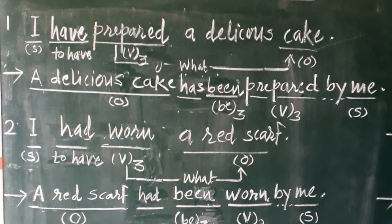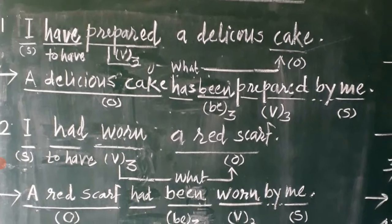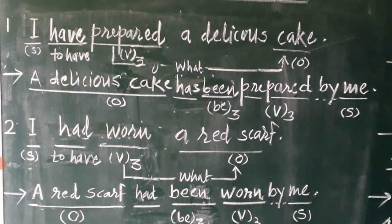While preparing the passive construction of a sentence in perfect tense, we need to put one more past participle. The past participle of 'to be' is 'been,' so that we can differentiate between an active sentence and a passive sentence. 'A delicious cake has been prepared by me' — 'I' is converted into 'me.' This is how a sentence in perfect tense is converted into passive construction.